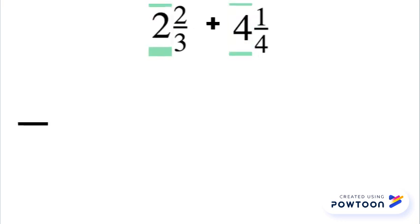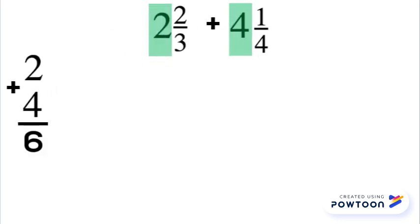Alright, let's look at another problem with two mixed numbers. Here we have 2 and 2 thirds plus 4 and 1 fourth. Let's highlight our two whole numbers, 2 plus 4 equals 6. We'll keep that to the side while we work on our fraction parts now, so 2 thirds plus 1 fourth.